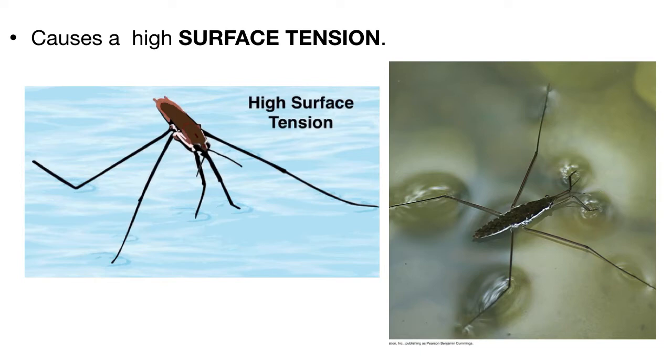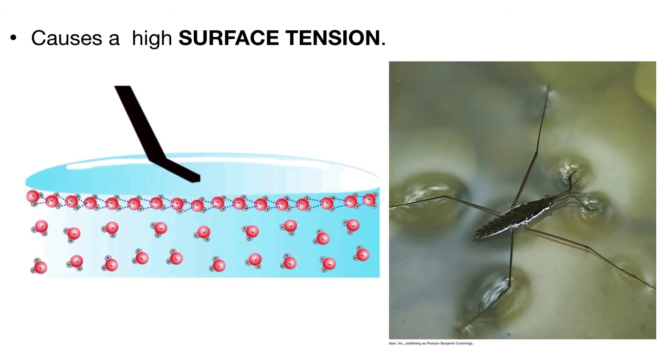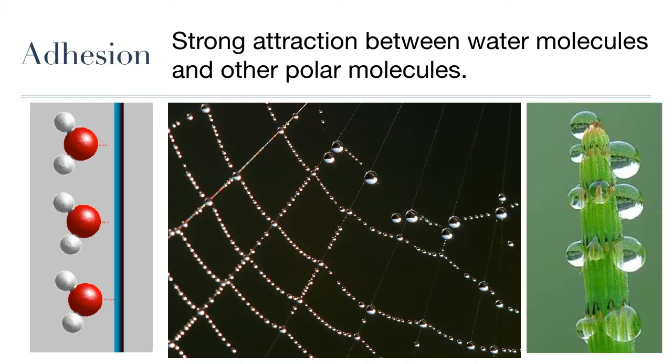And so it's this high surface tension of water that allows some insects to essentially walk on water. Surface tension due to hydrogen bonding creates a thin film on the surface of the water that gives enough resistance for these insects and at least one species of lizard to walk on.